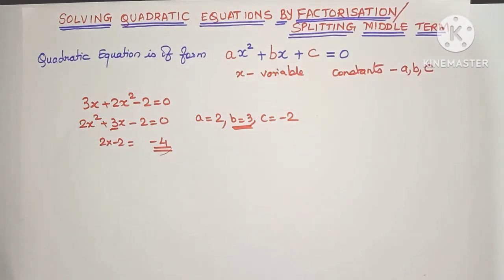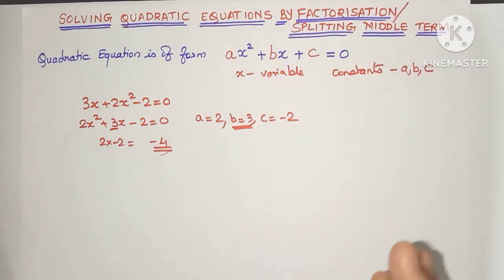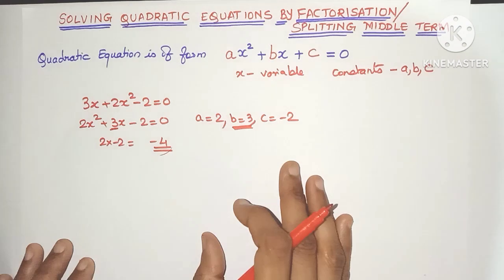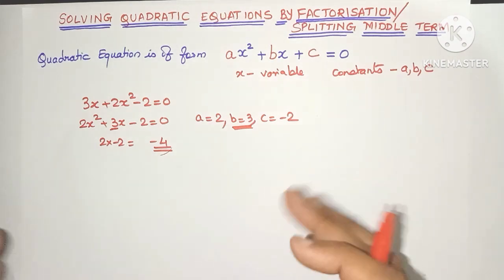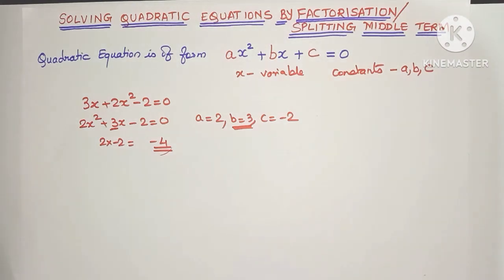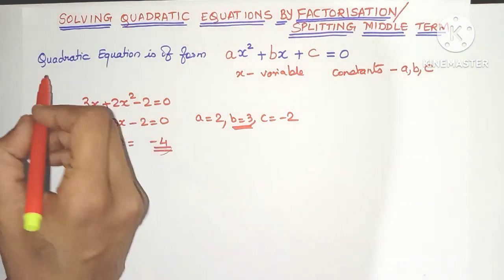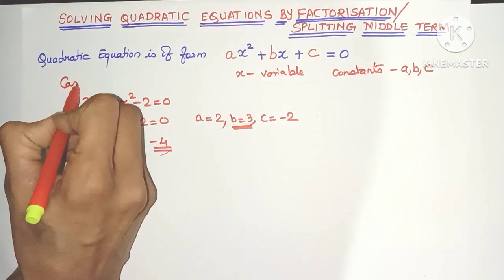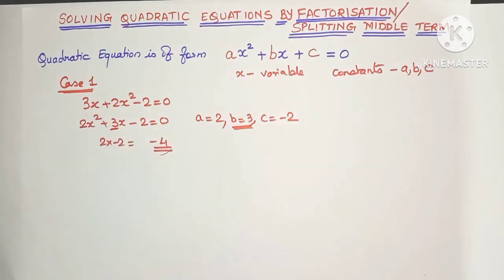Now how do we find the factors? Depending on how we find them, we are going to discuss 4 cases so that we can easily find out the factors of the given quadratic equation. This equation we have taken will come under the first case.